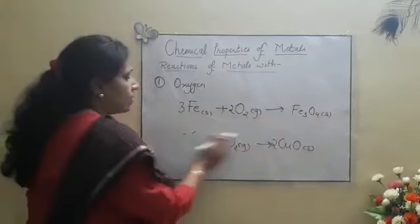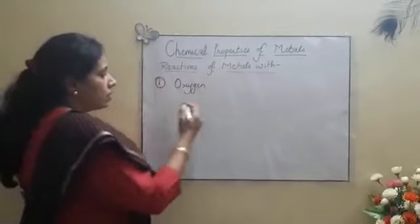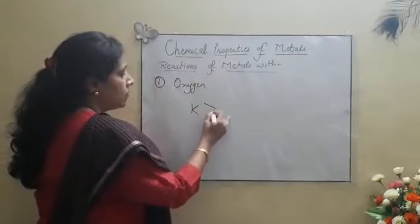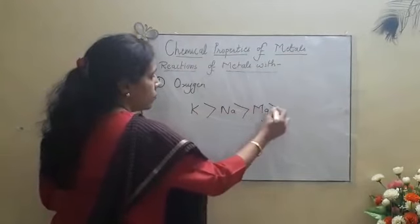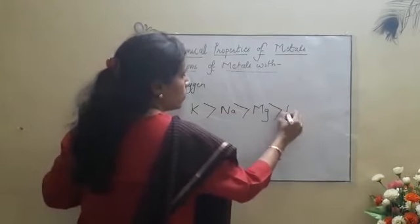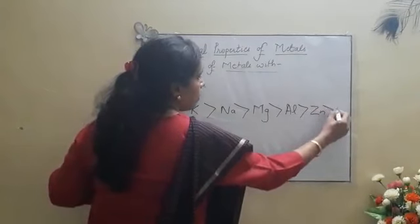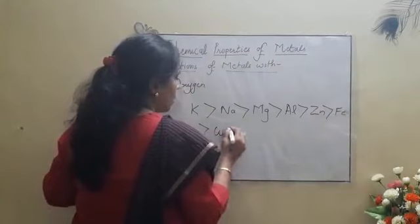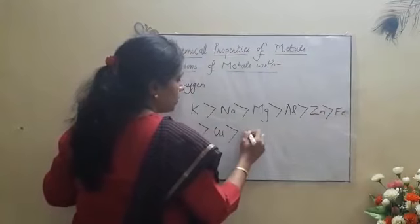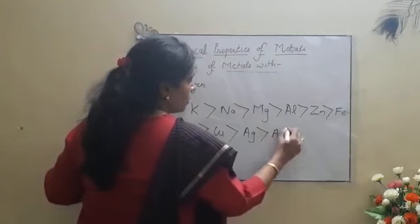The order will be potassium most reactive, then sodium, then magnesium, after that will come aluminium, then zinc, then iron, and then copper, and the least reactive will be silver, gold and platinum.